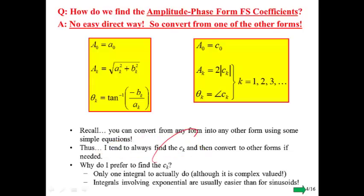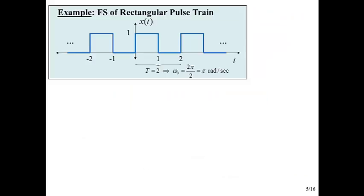I'd like to integrate exponentials and then convert to the other forms if needed. So as I said, why do I prefer these c sub k's? I prefer them because you've only got one integral to do, and it's often easier to do because there's exponentials involved. When you do the sine-cosine form, you've got a cosine integral and a sine integral to do. So you've got two integrals to worry about.